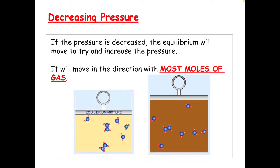Looking at the equilibrium equation again: N2O4 is in equilibrium with 2NO2, both gases. When pressure decreases, the equilibrium moves towards NO2 — the side with more moles of gas. Since NO2 is a brown gas and N2O4 is colourless, when you decrease the pressure, the mixture will become more brown because there will be more molecules of NO2 present in the equilibrium mixture.